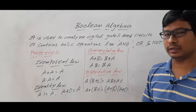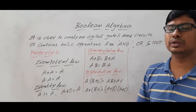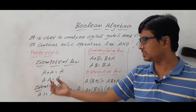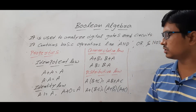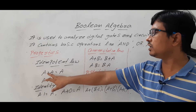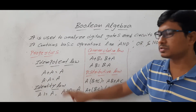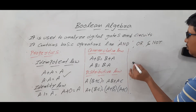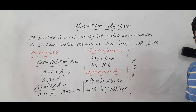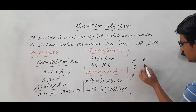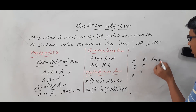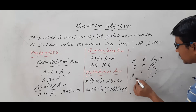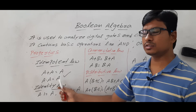The first property is the Idempotent law. All these laws can be verified with the help of truth tables — you can verify whether LHS equals RHS. The Idempotent law states: A OR A = A, and A AND A = A. To verify A OR A: take A as 0 and 1; 0 OR 0 = 0 and 1 OR 1 = 1, which is equivalent to A.